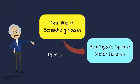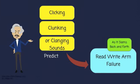Bearings or spindle motor failures could be predicted by grinding or screeching noises. Clicking, clunking, or clanging sounds predict read-write arm failure as it slams back and forth.